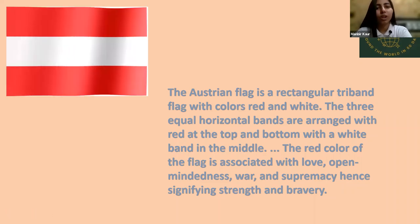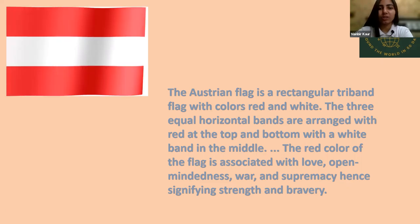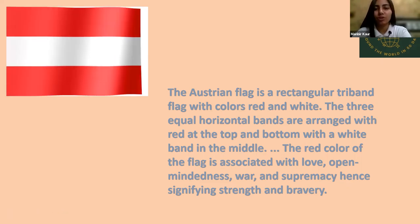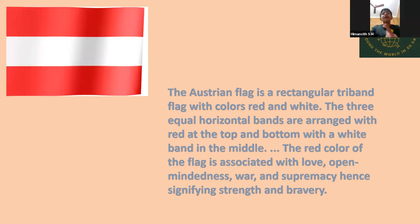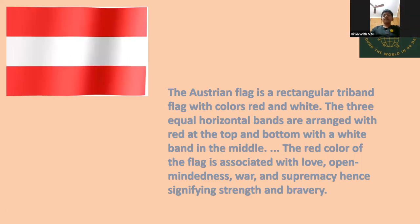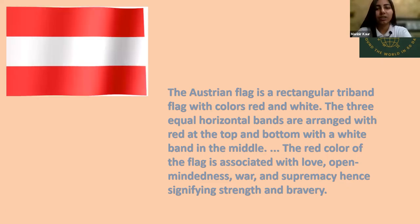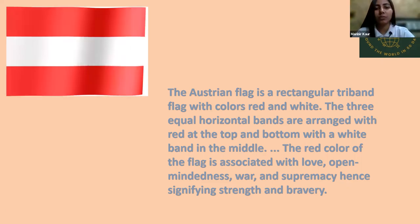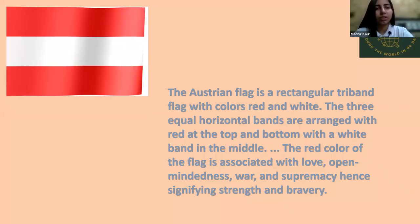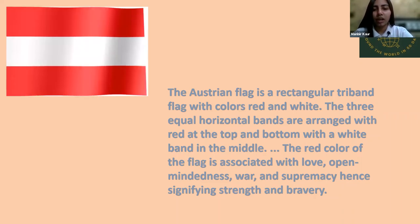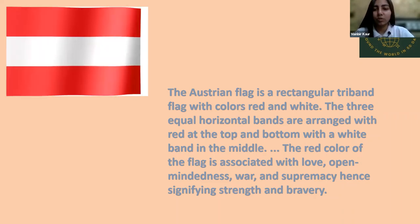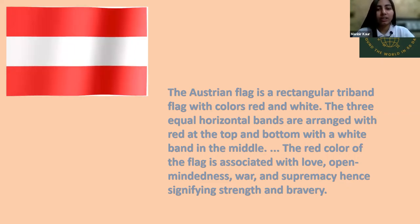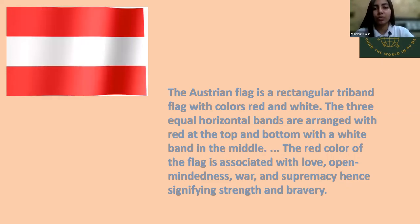Moving on to the flag of Austria — can you tell me the colors of the Austrian flag? Yes, red, white, and red. As you mentioned, the Austrian flag consists of three horizontal bands: two being red and one being white in the middle. The red color is associated with love among the people, open-mindedness, and warmth, signifying the strength and bravery of the people of Austria.